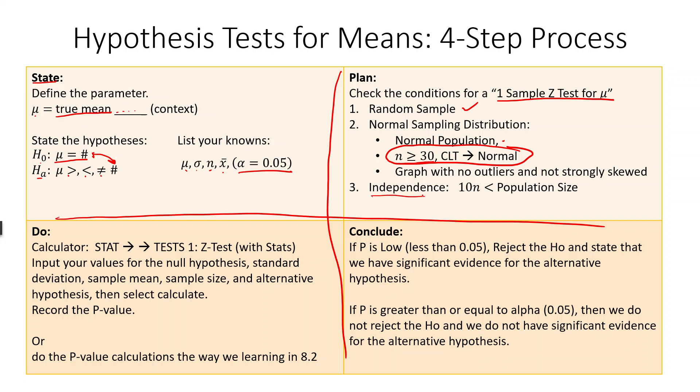Our last condition is just like before, independence. Ten times our sample size needs to be less than the population size. Not greater than, guys. Less than. There were some mistakes on that last time. Now, we do have a shortcut for this, just like we had a shortcut for P's.